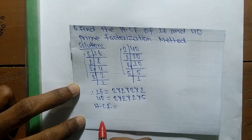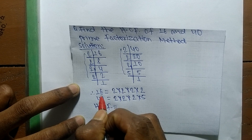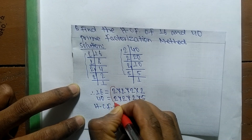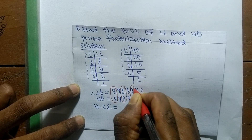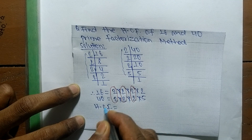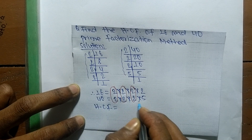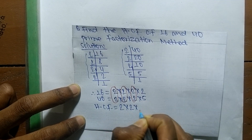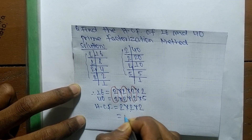Now we find the common factors in the prime factors of 16 and 40. The common factors are 2, 2, and 2. So the HCF is equal to the product of all these common prime factors, that is 2 × 2 × 2, which is 4 × 2 = 8.